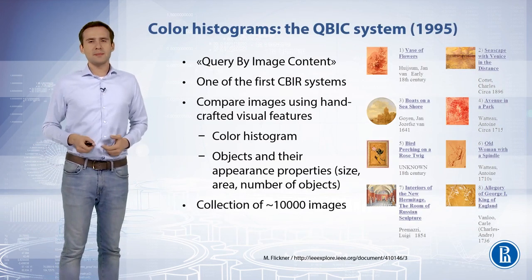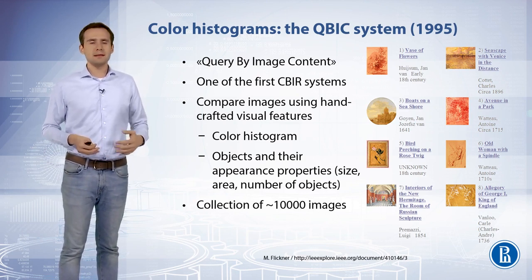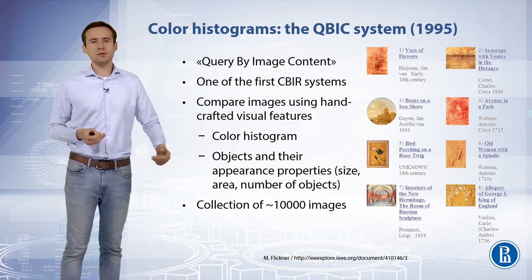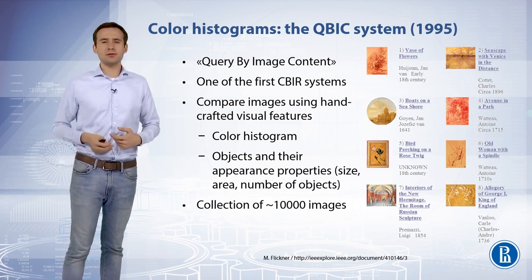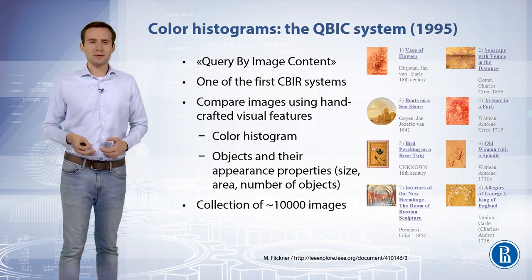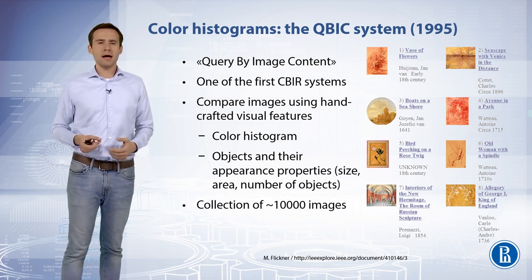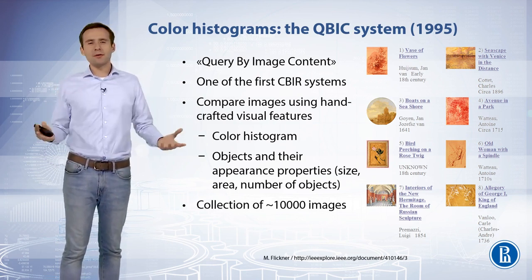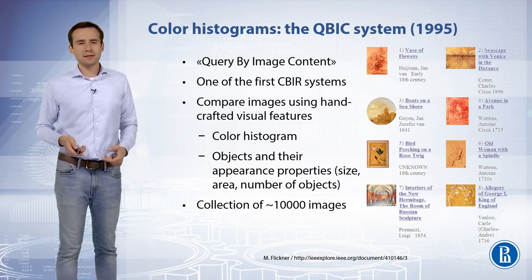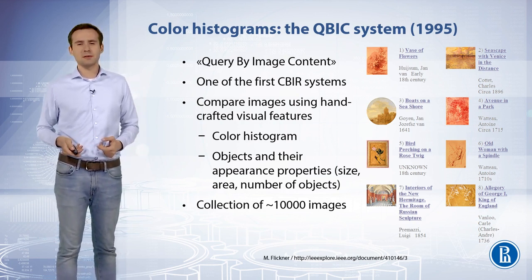One of the first content-based image retrieval systems was the QBIC system developed at IBM in 1995. It worked in two modes: image search using color histograms, and image search using object masks specified by the user. The second mode was possible thanks to a hand-labeled database of objects where attributes such as dimensions, area, or number of objects were marked. QBIC was also implemented to search through 10,000 images of paintings from the Hermitage Museum in St. Petersburg.